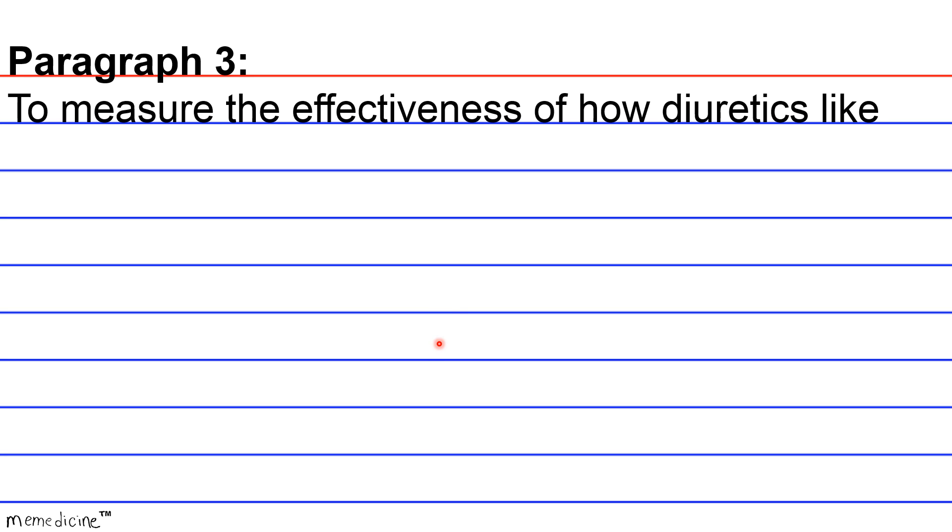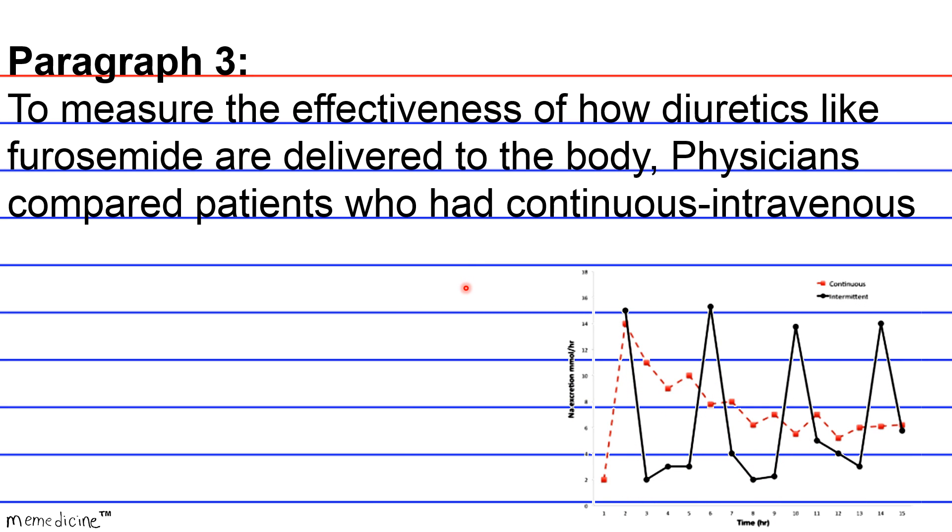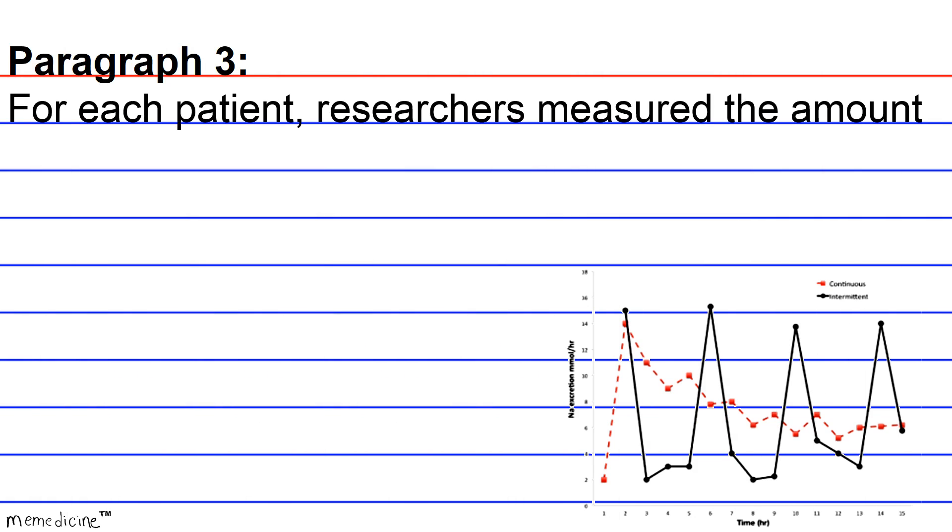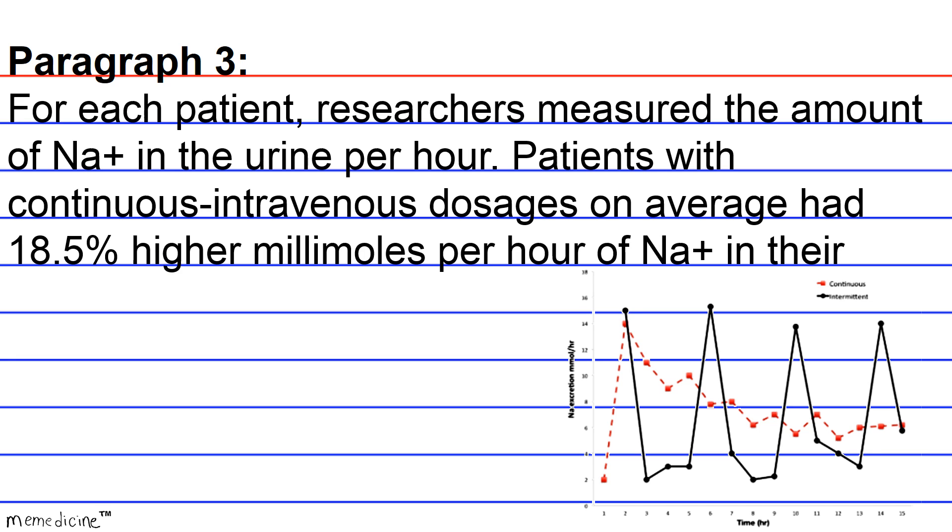In other parts of the body, physicians compared patients who had continuous intravenous doses of furosemide to patients who had oral dosage of furosemide. For each patient, researchers measured the amount of sodium in the urine per hour. So this denotes the sodium concentration. Patients with continuous intravenous dosages on average had 18.5% higher millimoles of sodium in their urine than those with oral dosages.